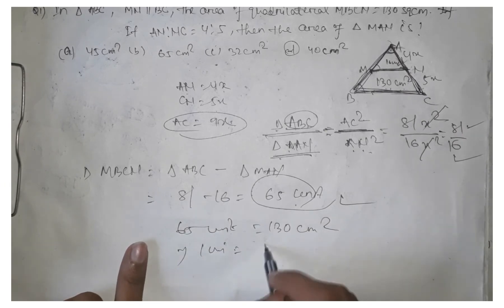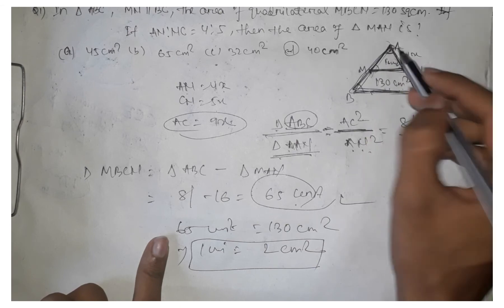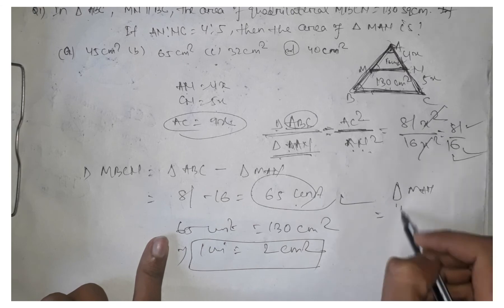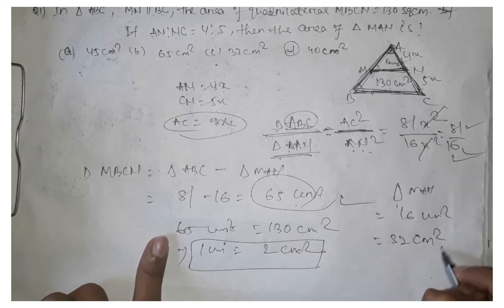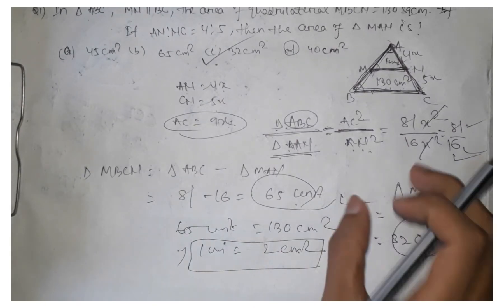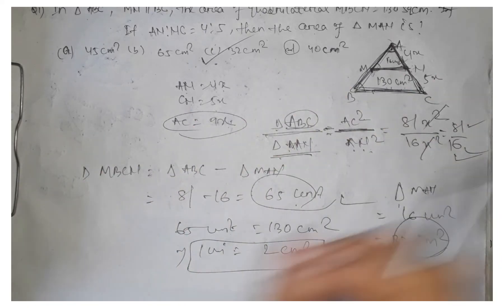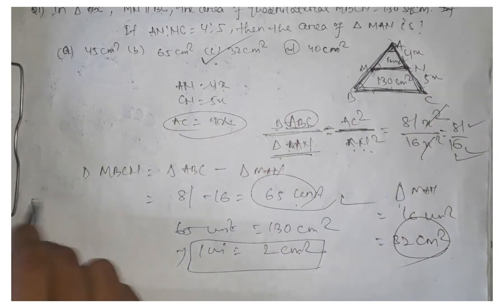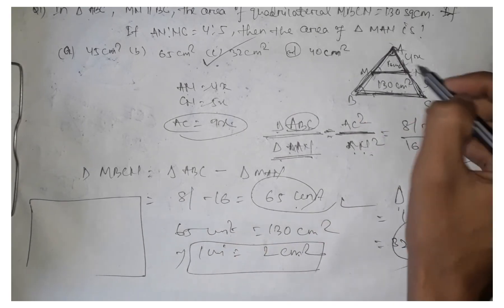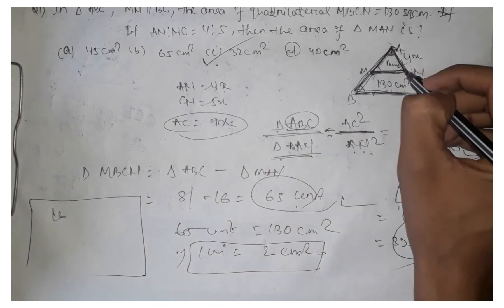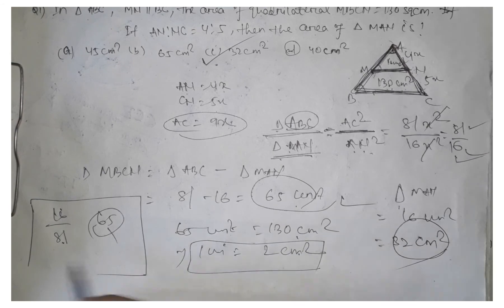We know that 65 units equals 130 centimeter square, so 1 unit equals 2 centimeter square. The area of triangle AMN is 16 units, and since 1 unit equals 2 centimeter square, the total area equals 32 centimeter square. So option C is the correct answer. We can solve this orally: since the ratio is 4 to 5, the areas are 16 and 81; 81 minus 16 is 65, which equals 130, so 16 equals 32 centimeter square.